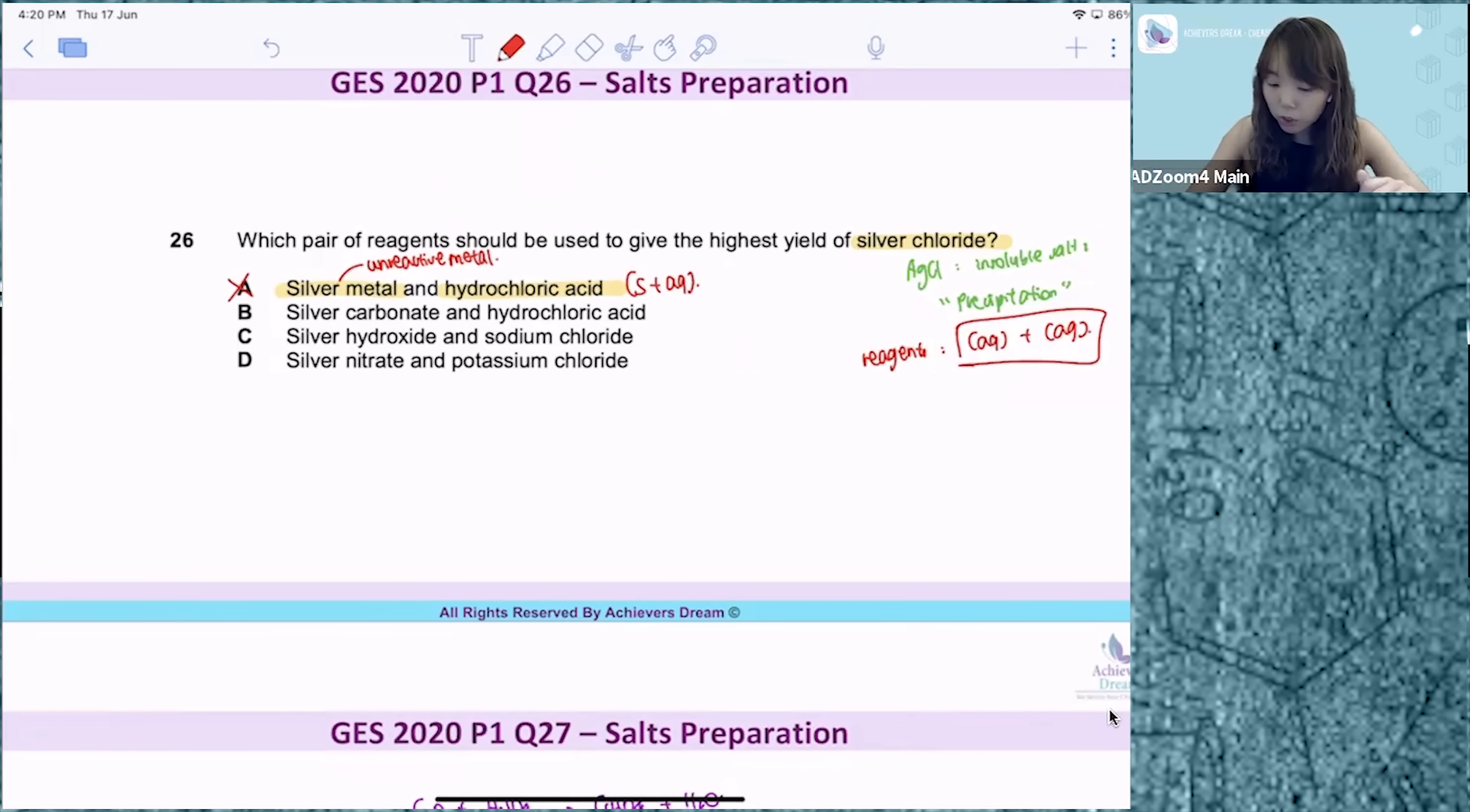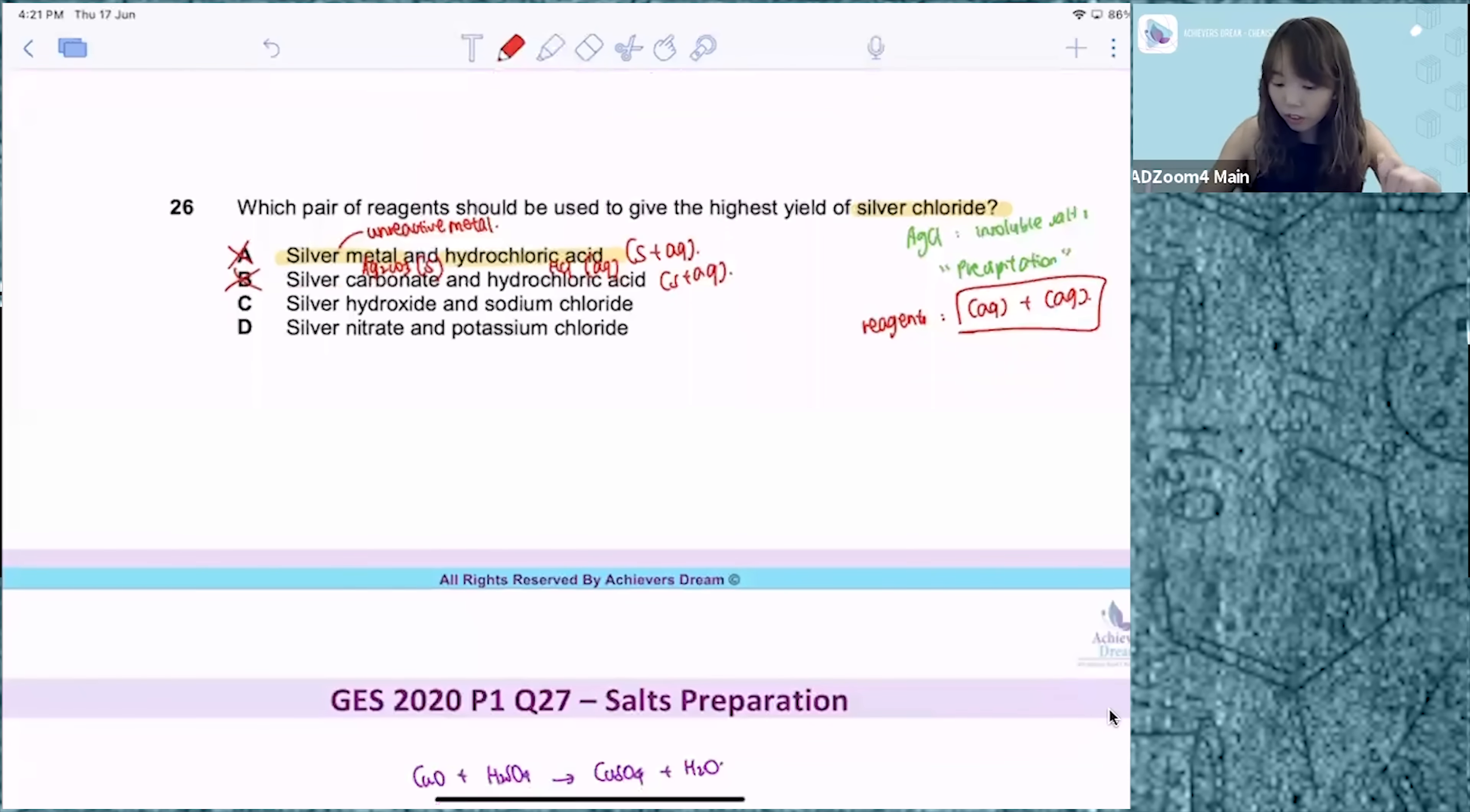Then for option B, silver carbonate, Ag2CO3, and HCl. Silver carbonate is an insoluble salt. State is solid. Again, this is a solid-aqueous combination, not what I'm looking for.